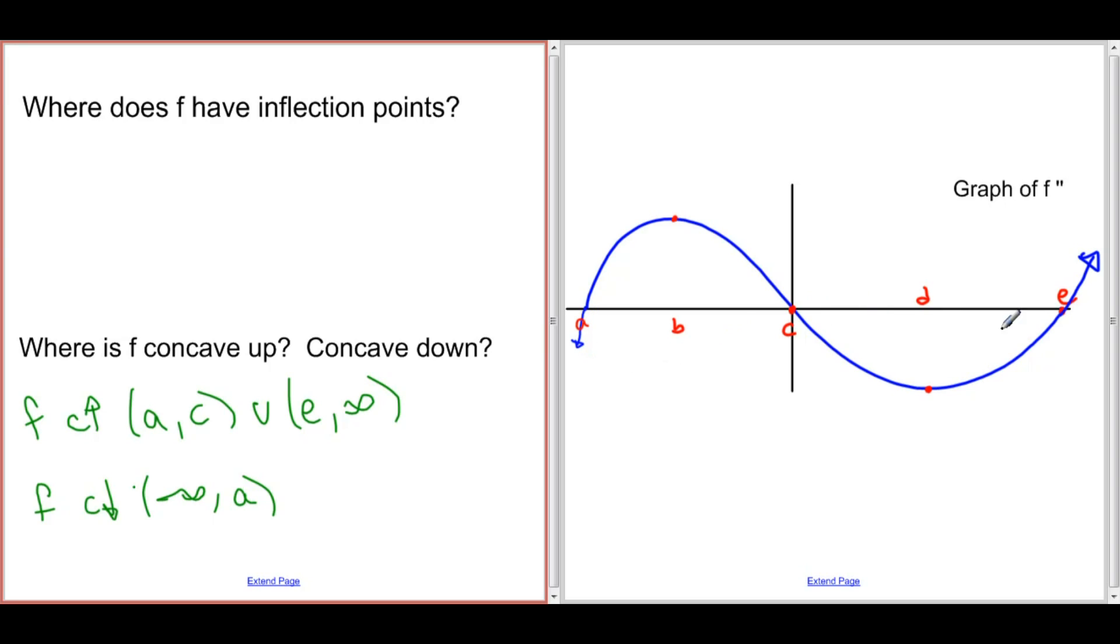And also, from c to e, the graph of f double prime is negative, and therefore f is concave down. So this is also concave down from c to e.